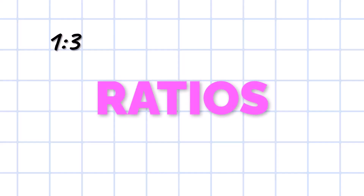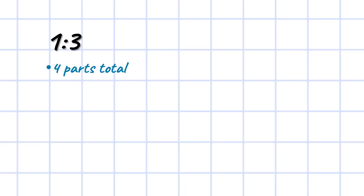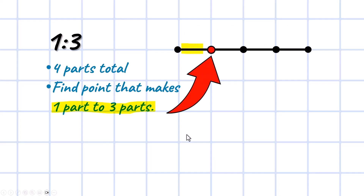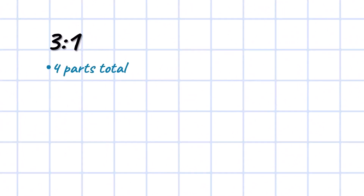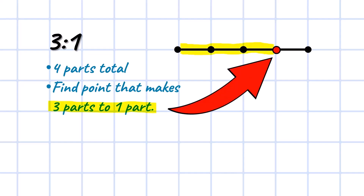I want to do a little bit of review to warm you up. It's probably been a minute since you worked with ratios. This is a ratio — it's read one to three. That means there are four parts. You're going to split something up so that you have one part compared to three parts. On this line segment, I'm looking for a point that divides it into one part to three parts — that point would be right here. Now the ratio is three to one: same numbers, different ratio. We still have four parts total, and we find the point that gives us three parts first, then one part — that would be this point right here.